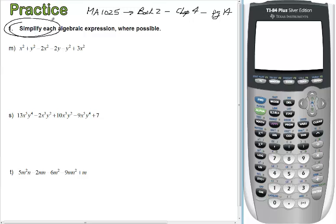We're asked to simplify each algebraic expression where possible. Where possible means sometimes you can add, sometimes you cannot add. This is often referred to as adding and subtracting like terms.